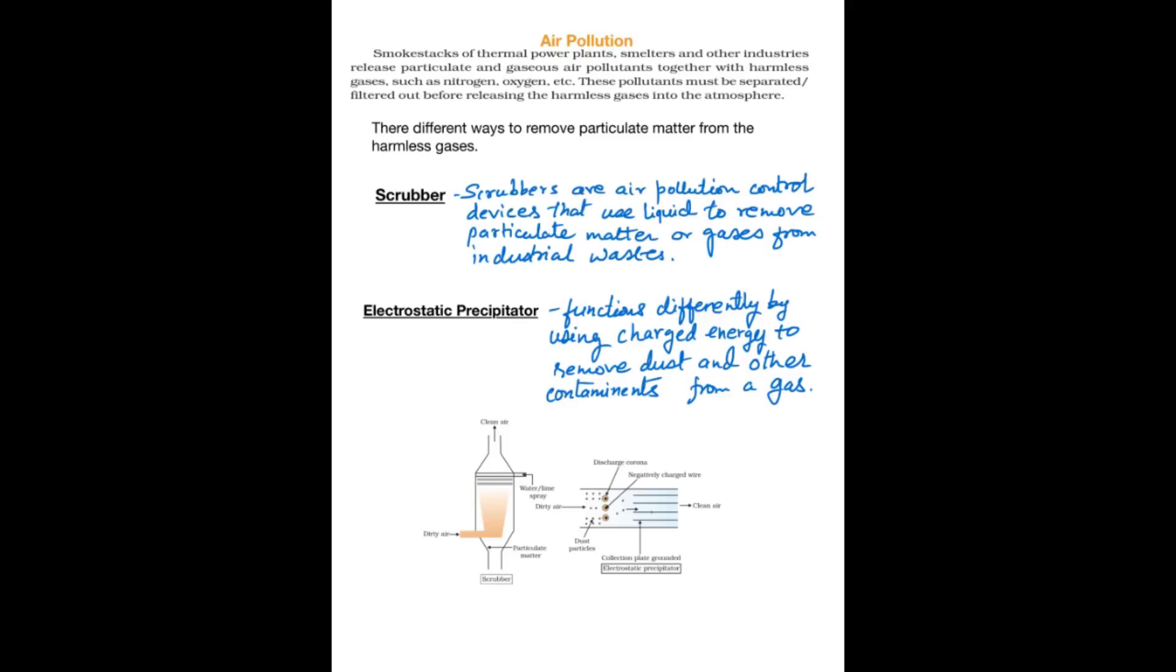What are scrubbers? Scrubbers are air pollution control devices that use liquid to remove particulate matter or gases from industrial waste. Electrostatic precipitators function differently from scrubbers. They use charge energy to remove dust or other contaminants from the gas. Here you can see the picture of both scrubber and electrostatic precipitator.